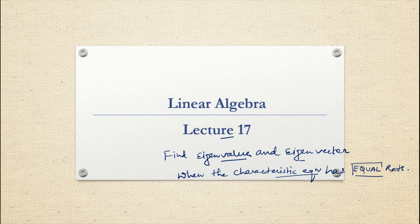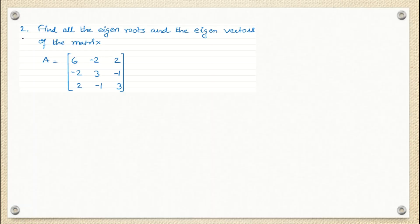We will be seeing how to find eigenvalue and eigenvector when the roots are equal. We are seeing example number two — example number one we covered in the last class. In this example we are going to find the eigenvalue and eigenvector of this matrix. We have discussed already that there are four steps to find the eigenvalues and eigenvectors. The very first step is: find the characteristic equation of the given matrix.